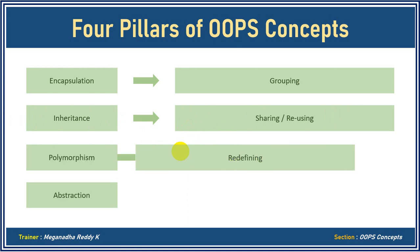The next one is polymorphism. Polymorphism stands for redefining — we do it using method overloading or method overriding. We'll talk about this in detail in the next modules.